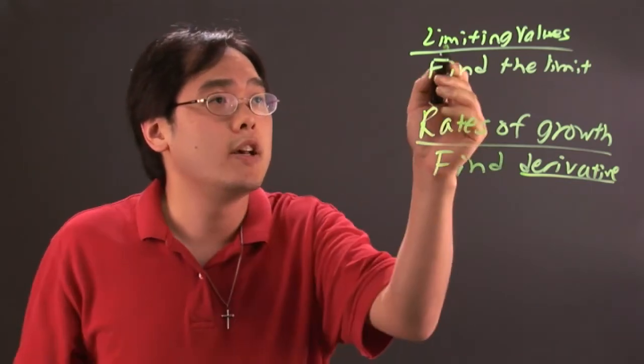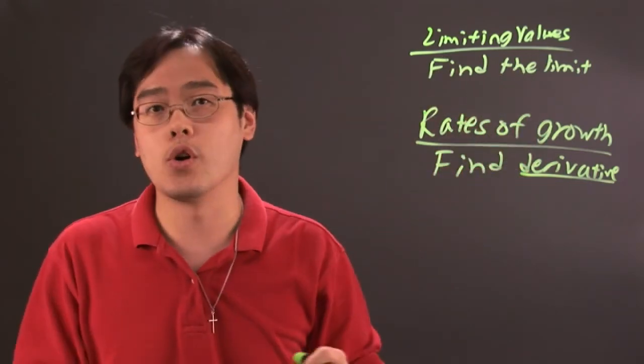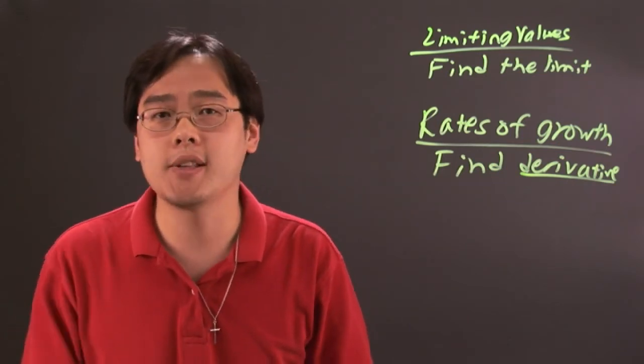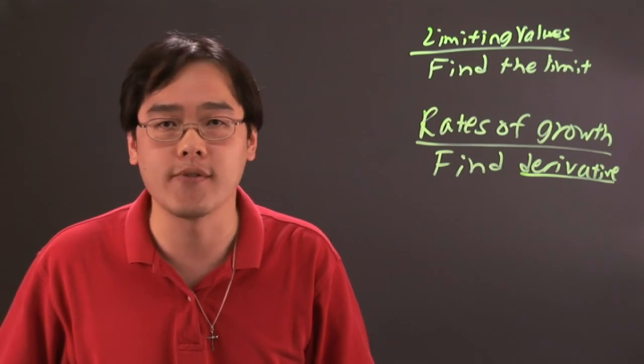So depending on the function, these are simply code words for what the actual calculus operation is supposed to be. So I'm Jimmy Chang and that's a brief general strategy on finding limiting values and rates of growth.